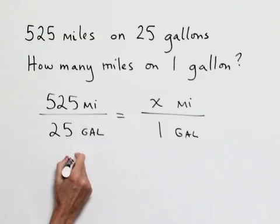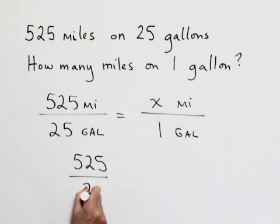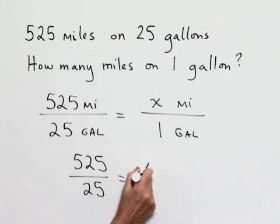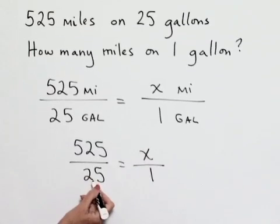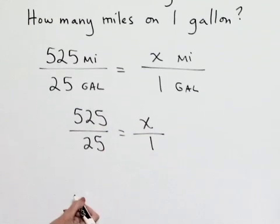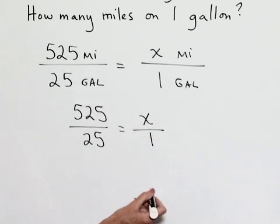So dropping the units off from our proportion, we'll have 525 divided by 25 equals x divided by 1. Now there's two ways to approach the problem. One is simply to divide 25 into 525 right now to get the result, and that's going to equal x divided by 1, which is x.